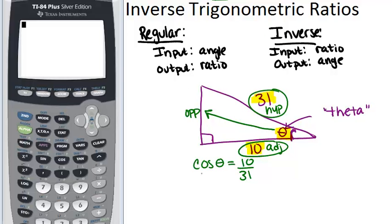Now, we can't plug into our calculator cosine of theta, but this is where we're going to flip it around. Because we're solving for the angle, what we're going to do is cosine inverse, which looks like this: cosine with a little negative 1, that's the symbol for inverse, of 10 over 31. So we're going to tell the calculator the ratio, and it will give us the angle.